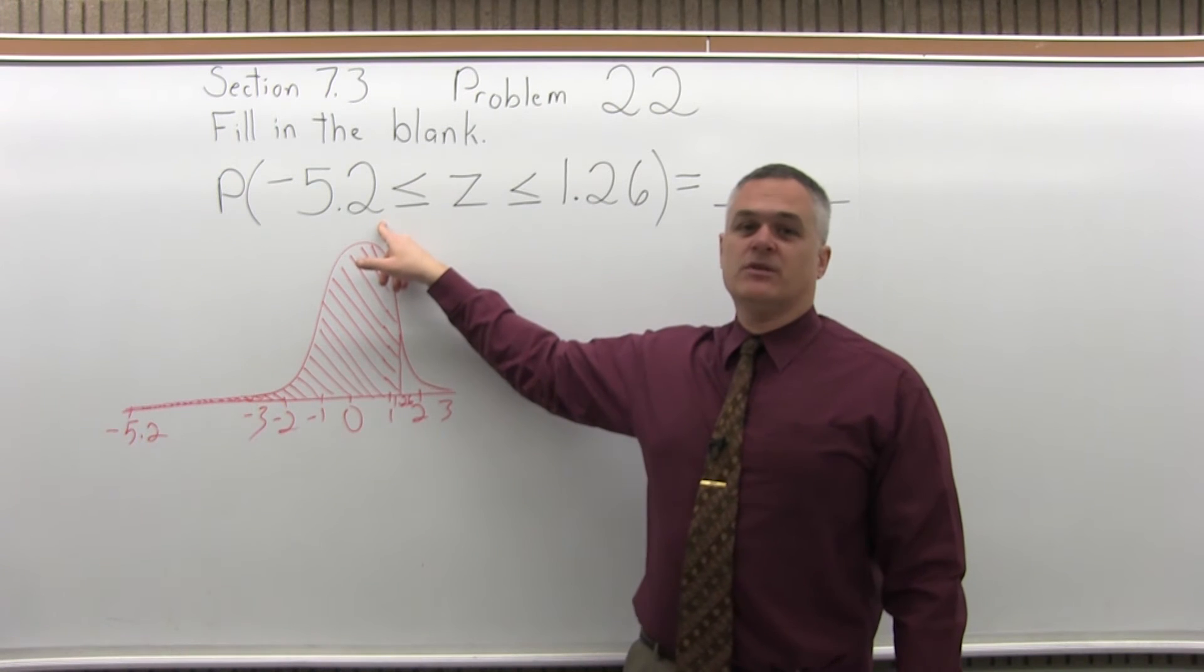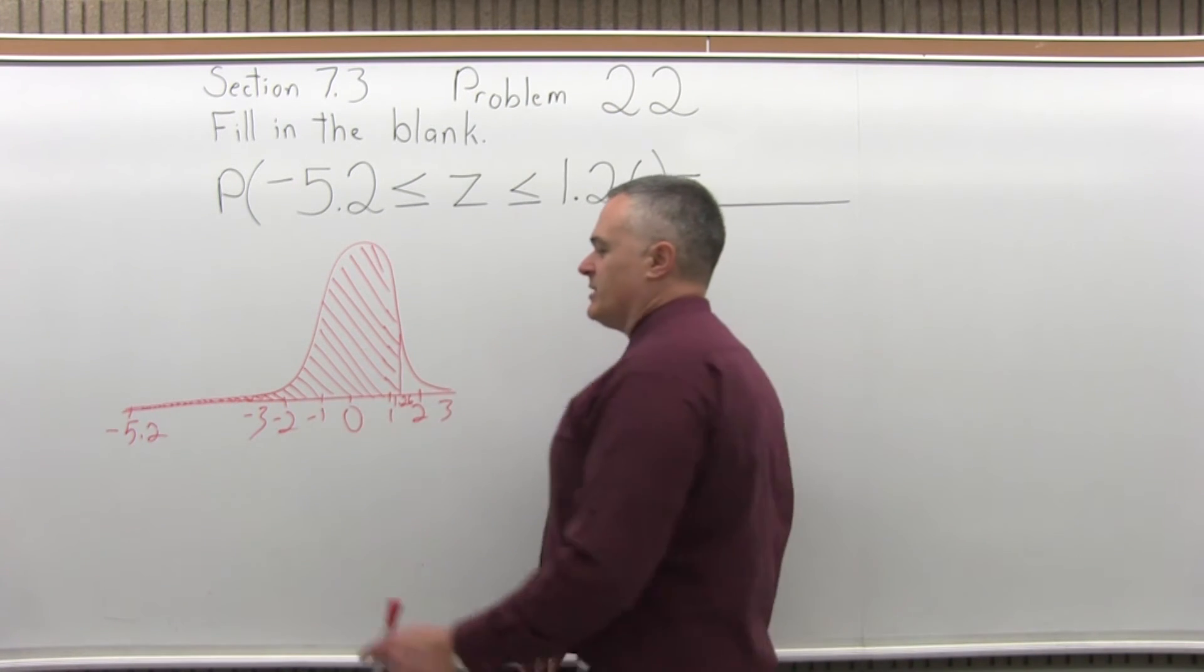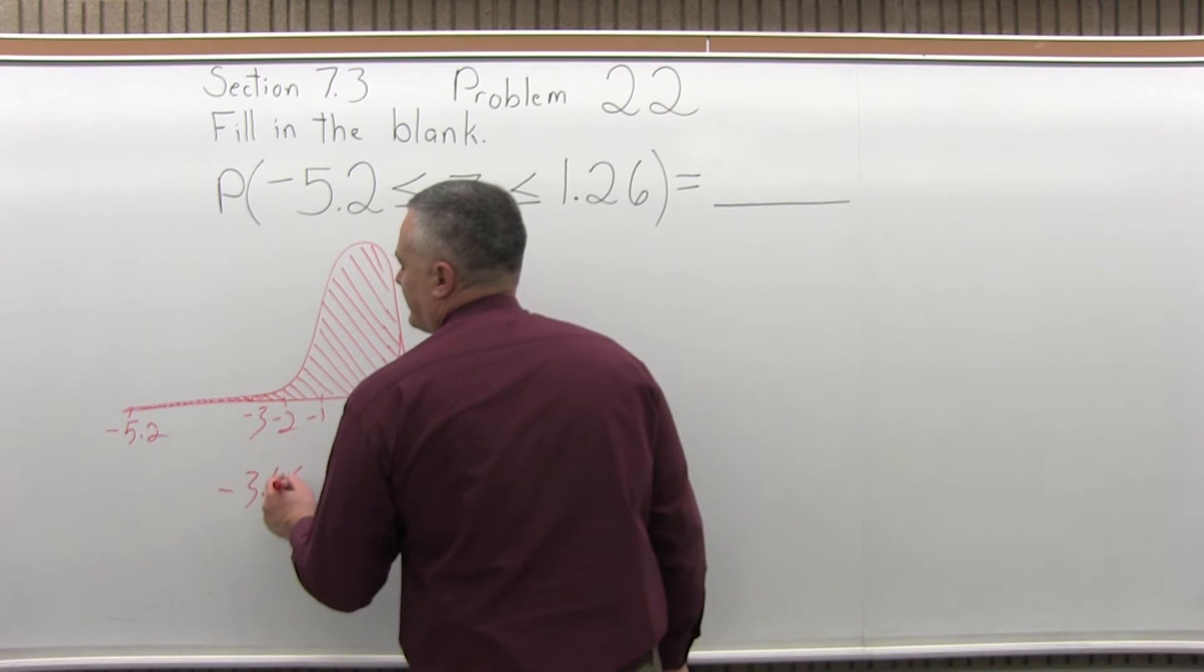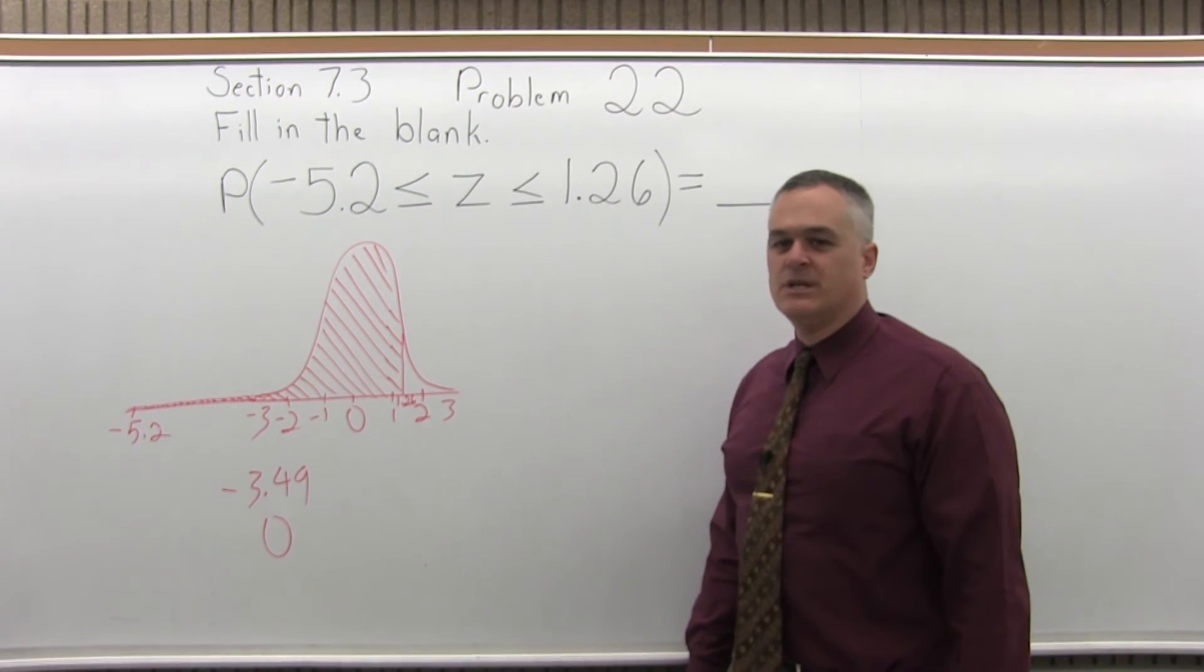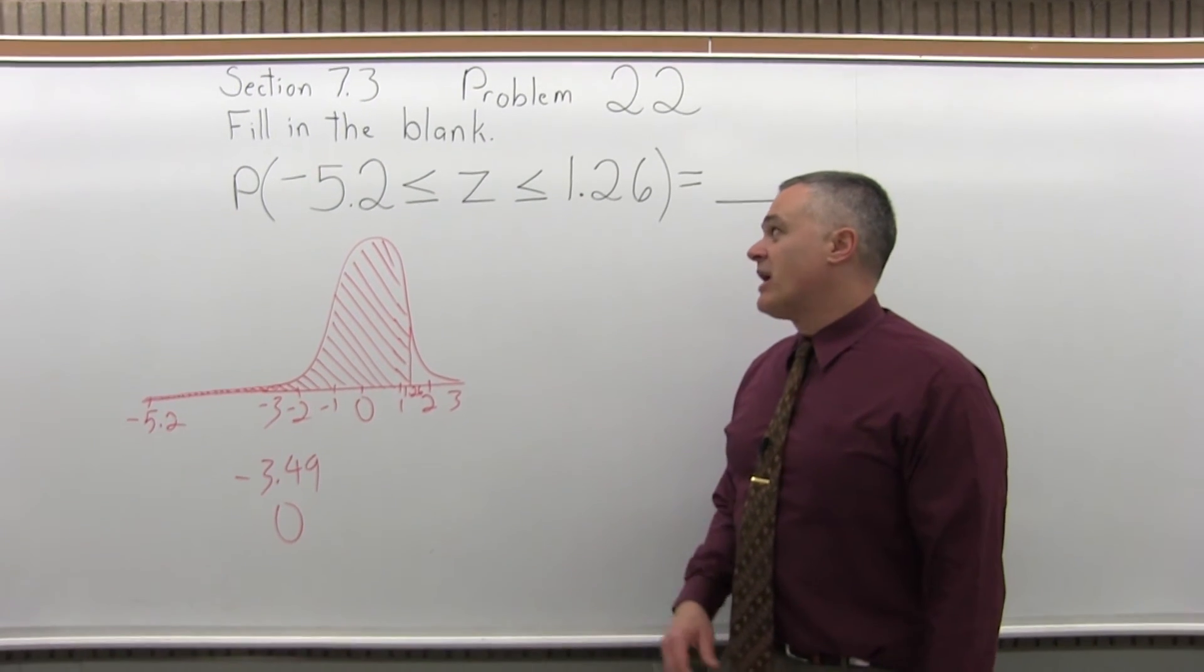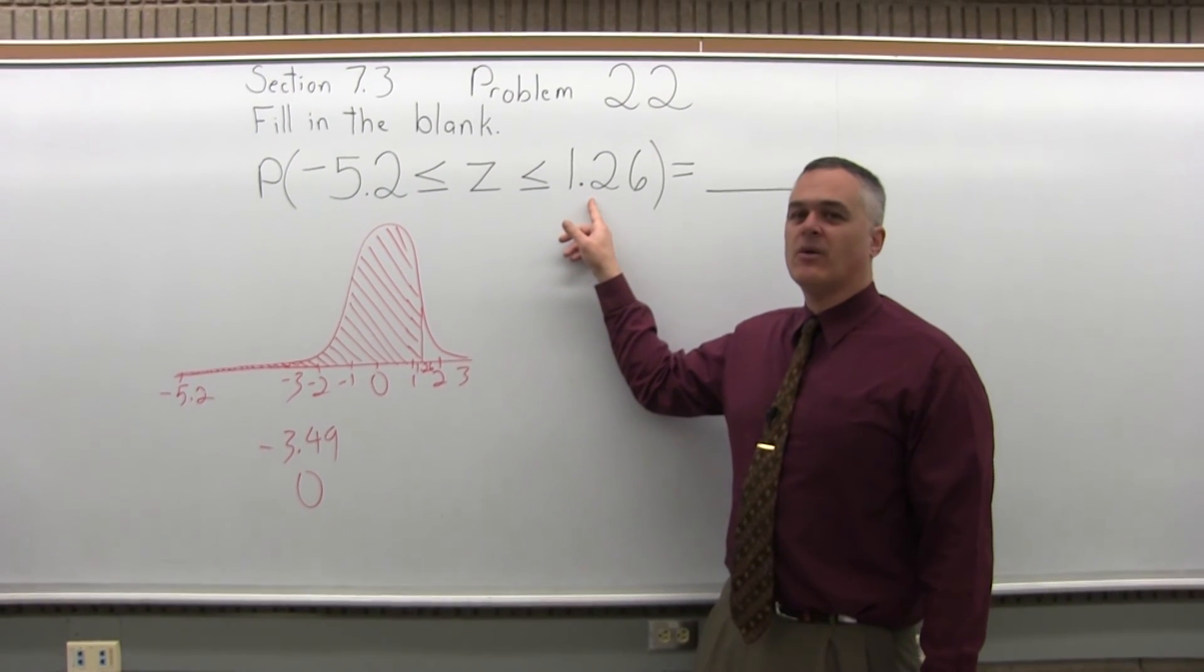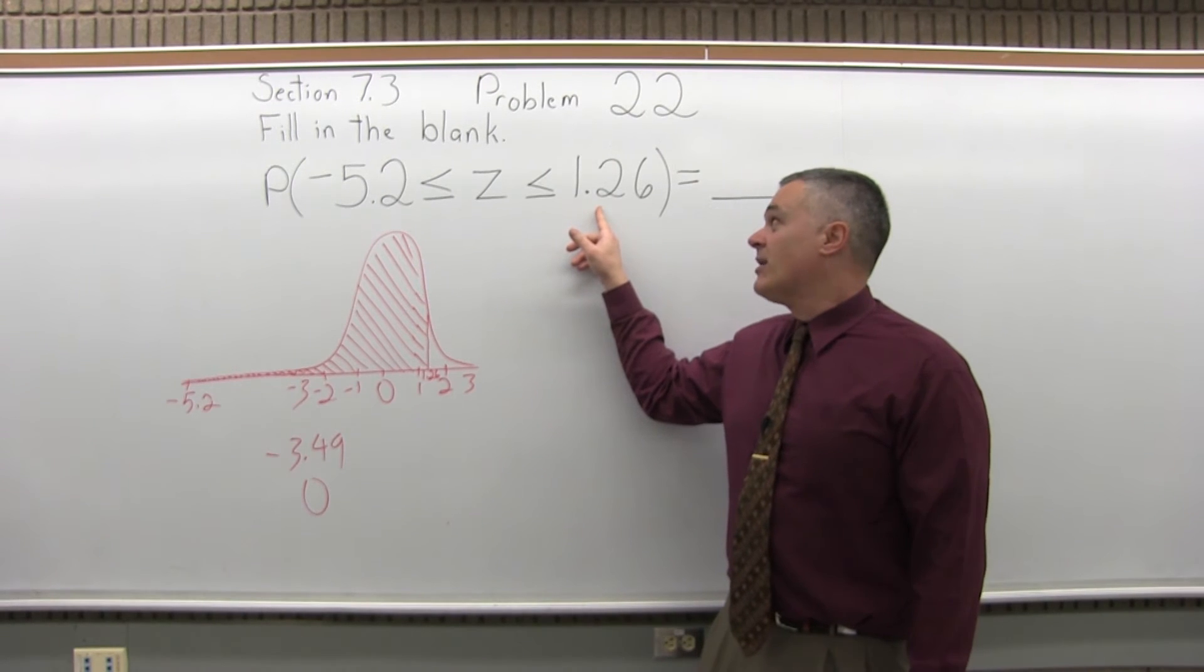Well, the negative 5.2 is way off the chart. Again, from the notes, it says for values that are less than negative 3.49, the chart value is zero, so I'm off the chart. The 1.26 though, I'm not off the chart, I'm still within the chart, which I can look up.